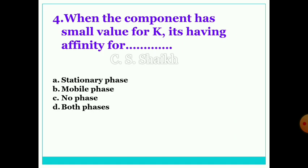Fourth question is: when the component has small value for K, it's having affinity for? Whether stationary phase, mobile phase, no phase, or both the phases? So the correct answer will be stationary phase.